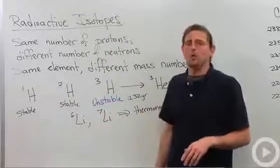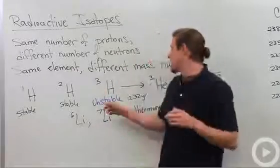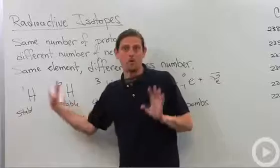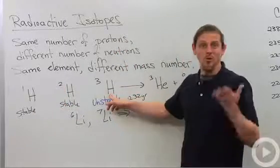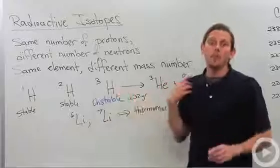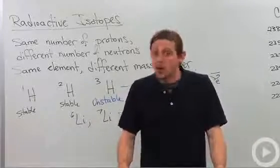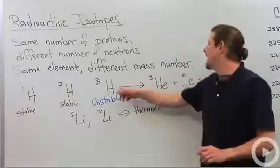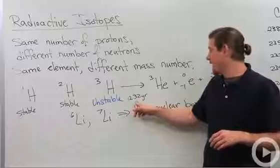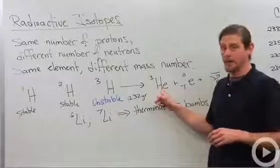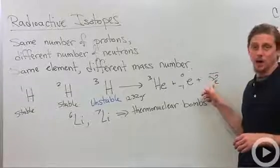Then there's hydrogen three. So this is a proton and two neutrons. This guy is unstable unlike these two that are both stable isotopes of hydrogen. This guy, which is called tritium, is very important in thermonuclear devices and in fusion studies and he decays in about 12.32 years, that's the half-life, into helium three, an electron, and an anti-neutrino.